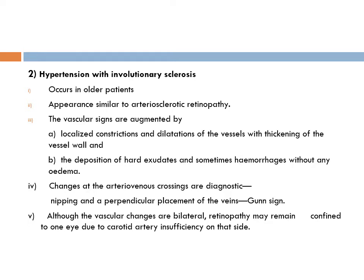Vascular signs in this category include localized constriction and dilatation of vessels with thickening of the vessel wall, deposition of hard exudates, and sometimes hemorrhages without edema — the blood-ocular barrier is not broken. Importantly, there will be AV crossing changes. As an undergraduate student you must know: nipping and perpendicular displacement of the vein at AV crossings, known as the Gunn sign. Your homework is to find out other AV crossing changes: the Salus sign, Gunn sign, and Bonnet sign.